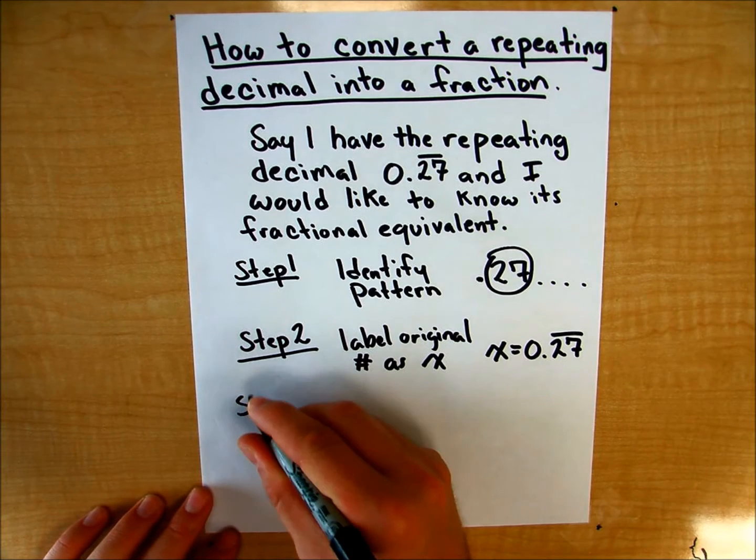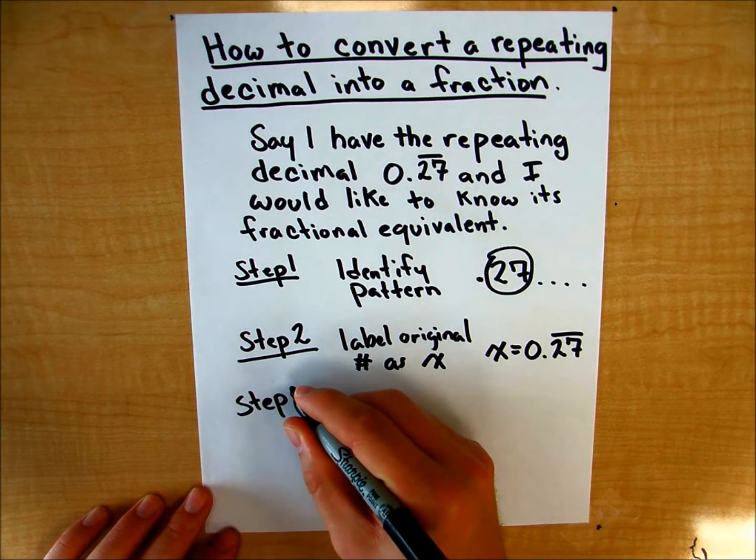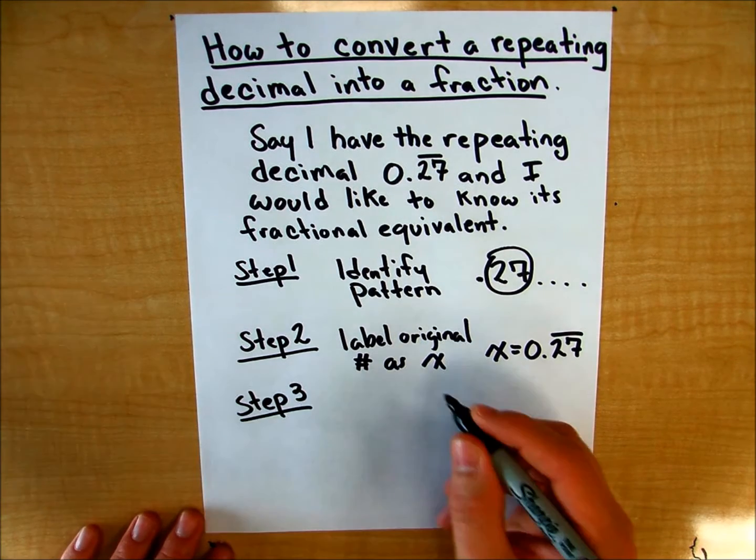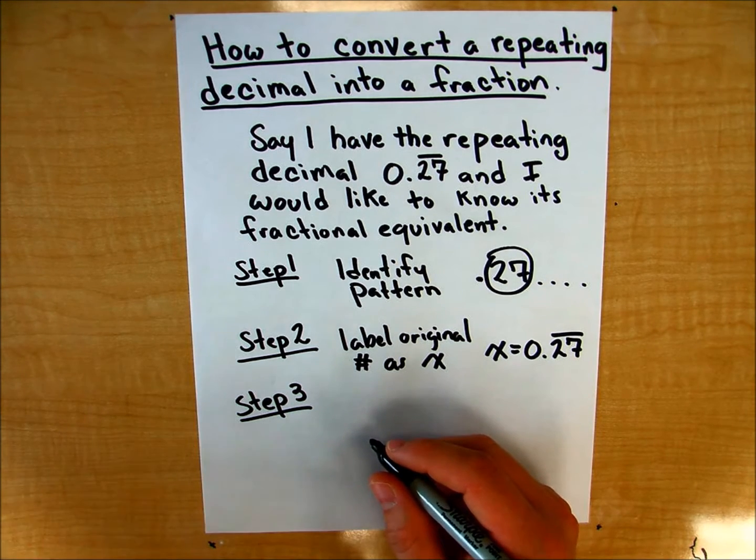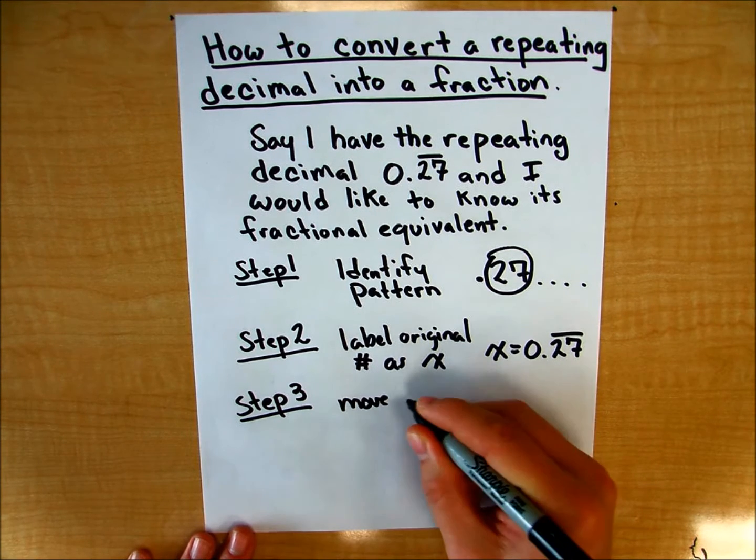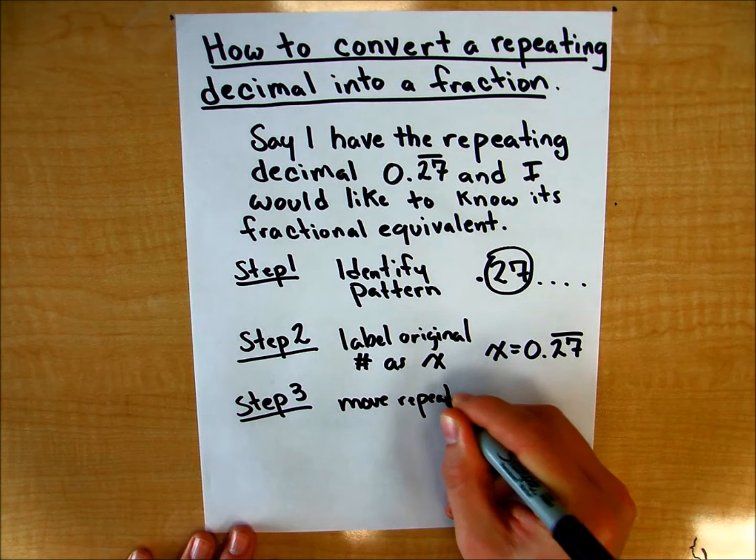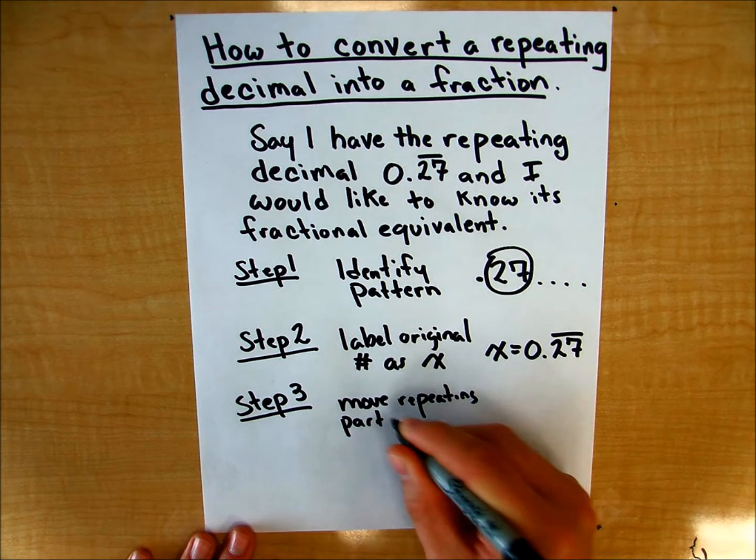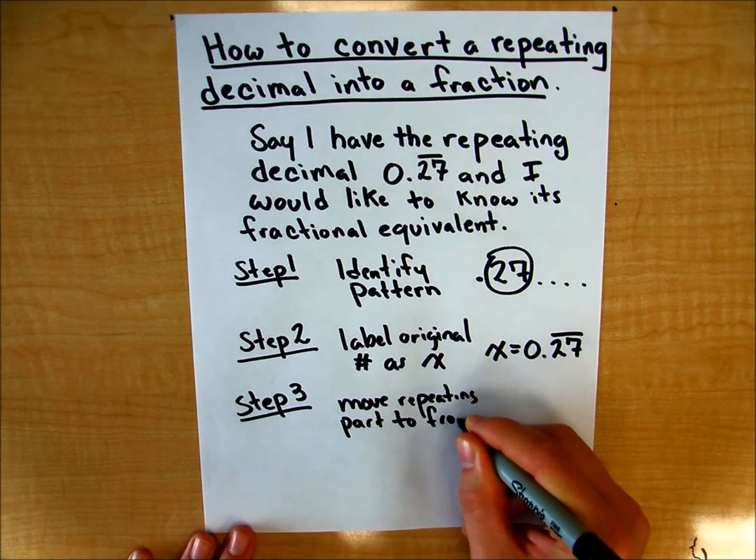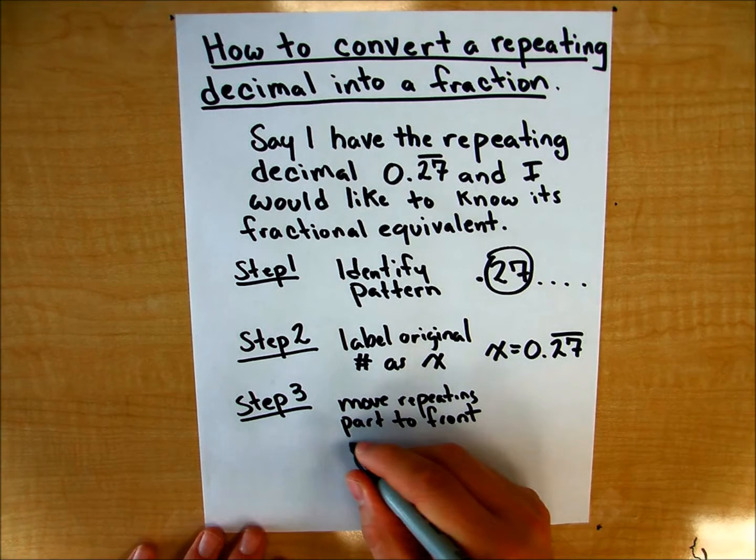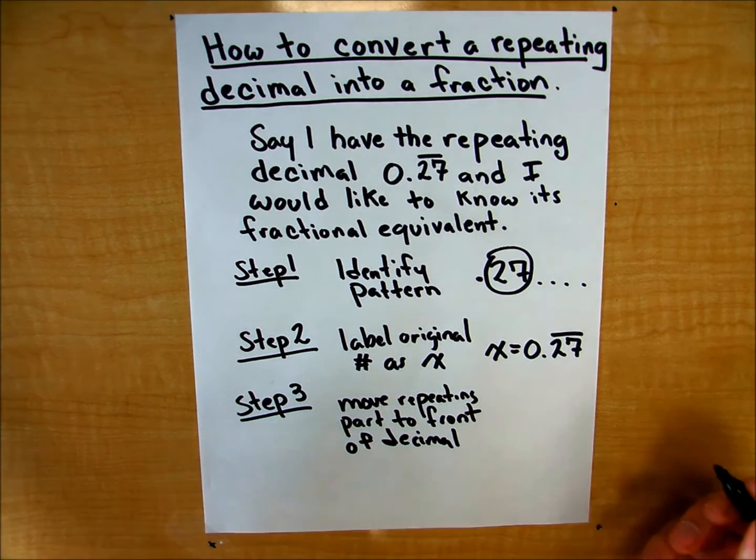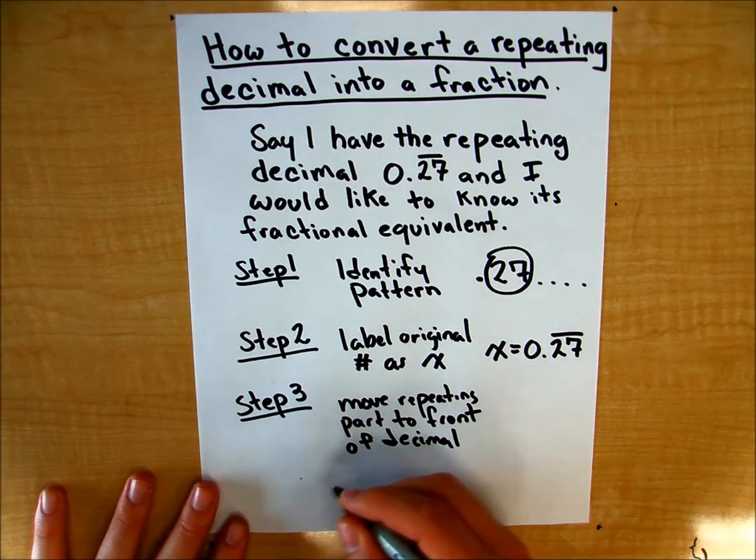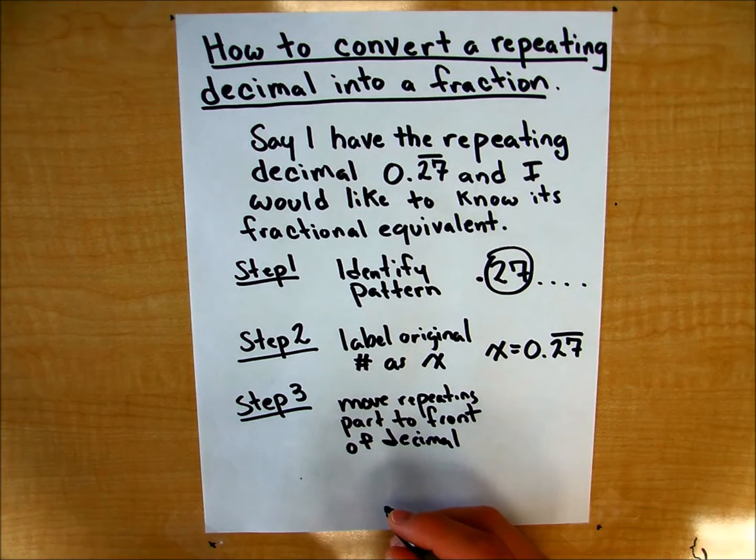Step three: I'm going to move the repeating part to the front of the decimal place. So move repeating part to front of decimal. In this case, how I can do that is I can multiply both sides by 100, right?